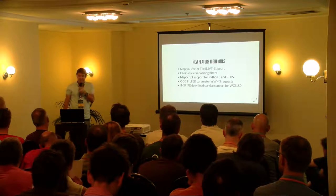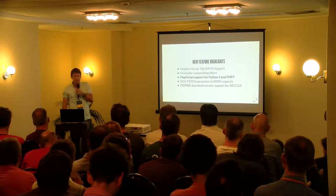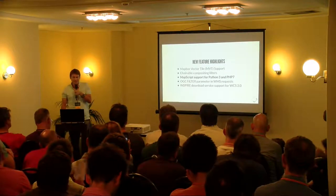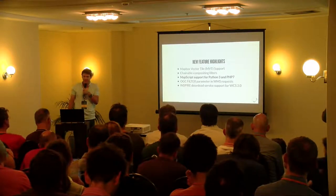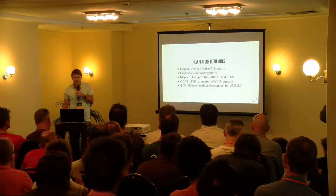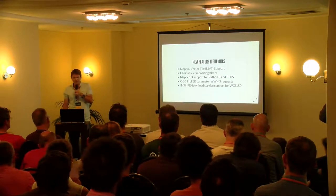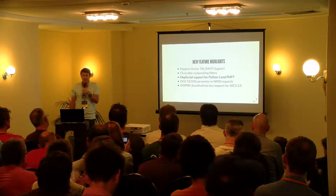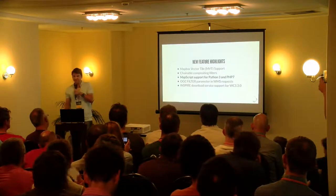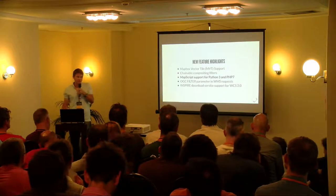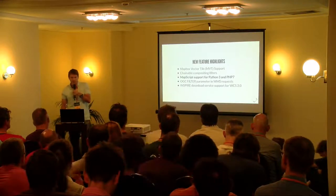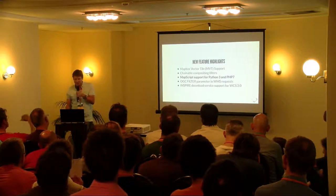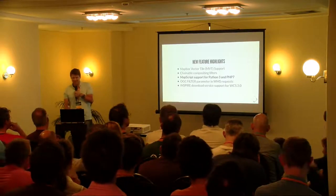These are some of the feature highlights from 7.2 and 7.4. I'll go into more detail on vector tiles, compositing filters, and MapScript. There are also a couple of other nice features: you can now filter WMS requests — I think this is Daniel's implementation using OGC filters, so you can pass in a filter from a URL and filter your WMS directly. And all Europeans love the Inspire support, so there's new stuff for Inspire for WCS too.